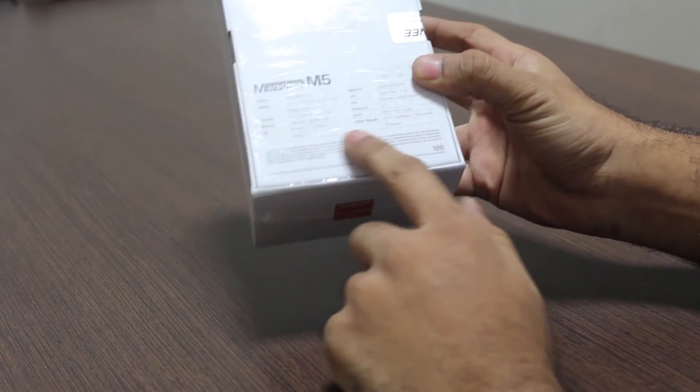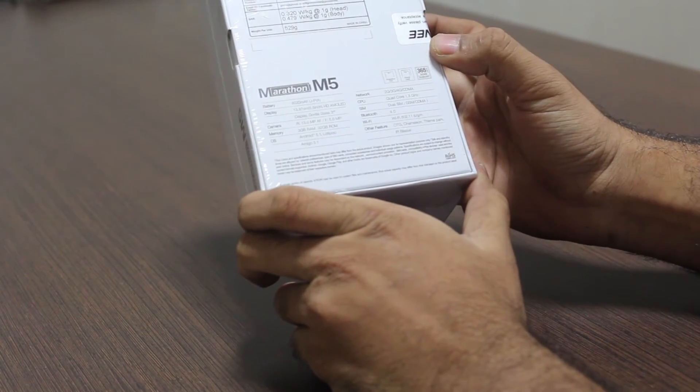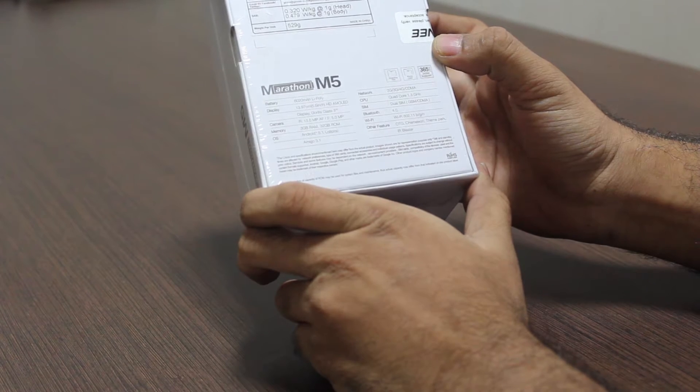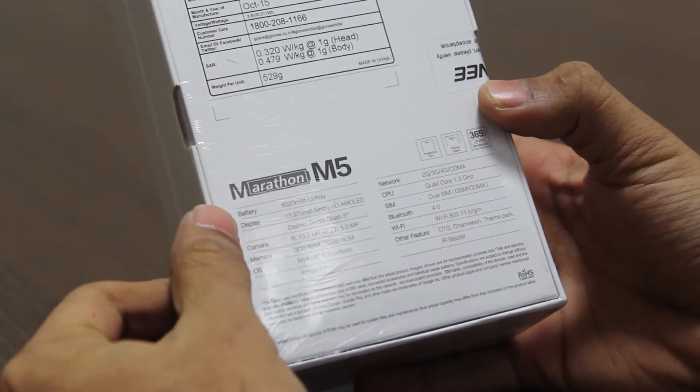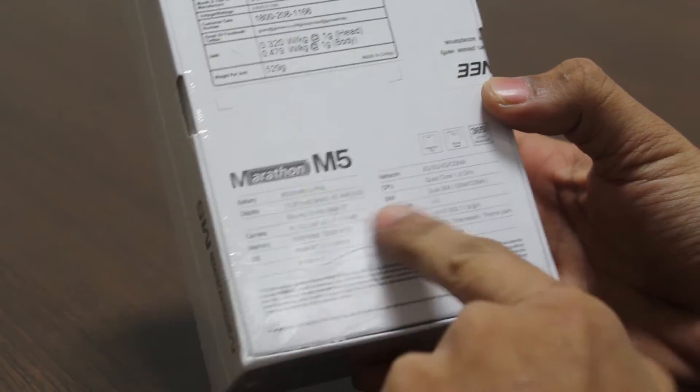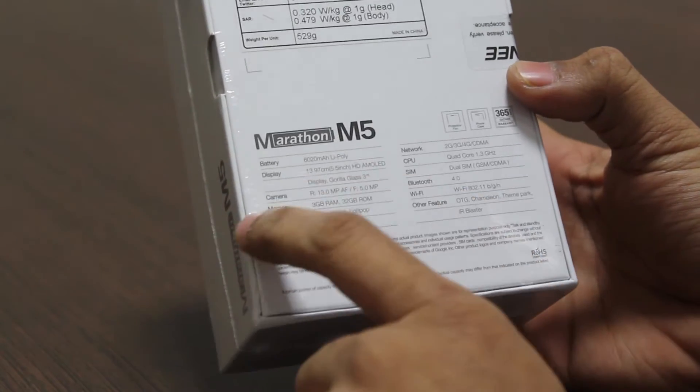Gionee has listed the battery on top and it's a huge 6020mAh unit, non-removable of course. It has an HD AMOLED display with a resolution of 1280x720 pixels and there's Gorilla Glass 3 protection for it.